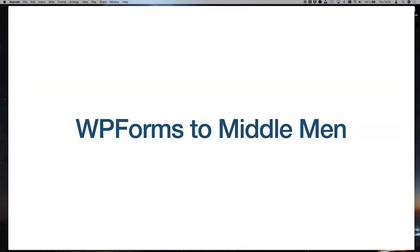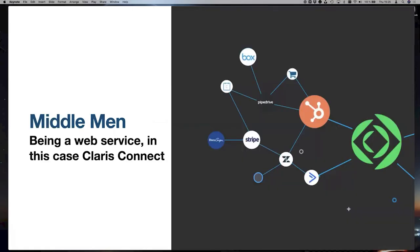Once you build the web form, you probably want the data to go somewhere. The standard setup sends it as an email to the address you configure, with CC and BCC options. But we want data stored in FileMaker. In this case, I'll be using Claris Connect as the middleman — though there are many other ways, like a node-based web service. Since we are at a FileMaker conference, I chose the Claris product called Claris Connect.